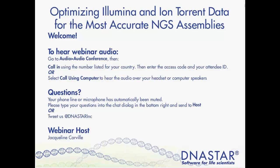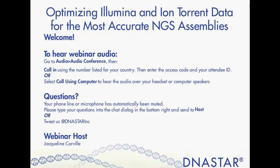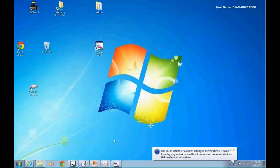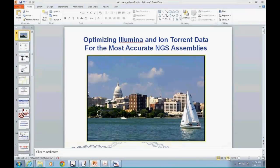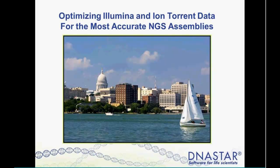Thank you, Jackie. Thank you for joining us today. I'm going to take just a second here and share my desktop. As Jackie mentioned, today is going to be a webinar that focuses on one of the newest workflows in DNASTAR software — using Illumina and Ion Torrent data in gene panel or exome assemblies. We have a mechanism now to assess the accuracy of those alignments, and I'm going to show you the process, how to do that in the software, and then we'll look at some of the results that have been published recently.